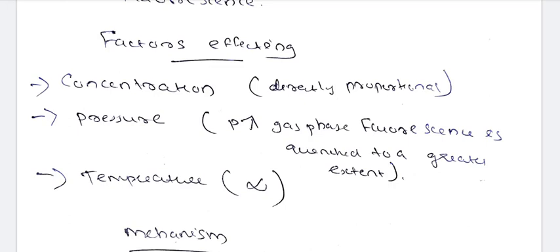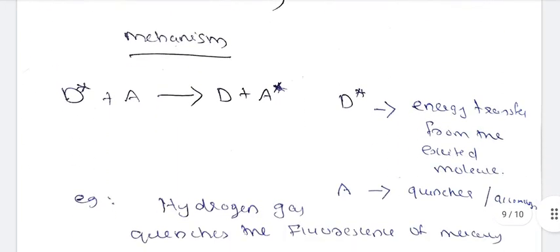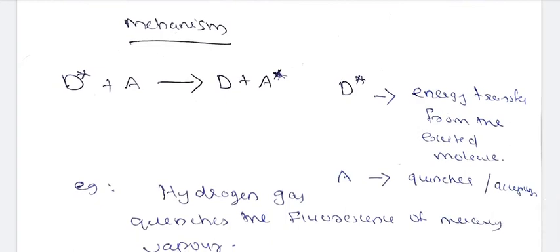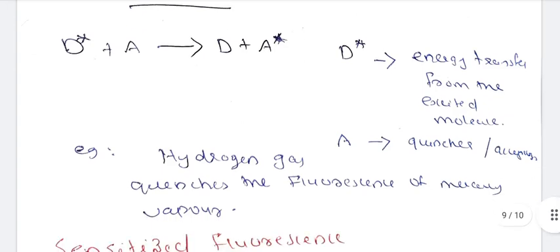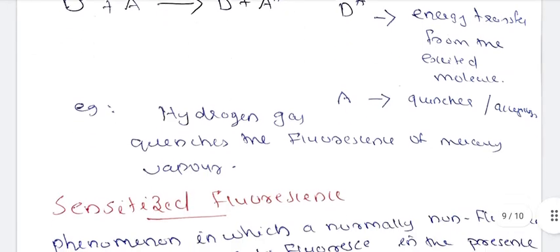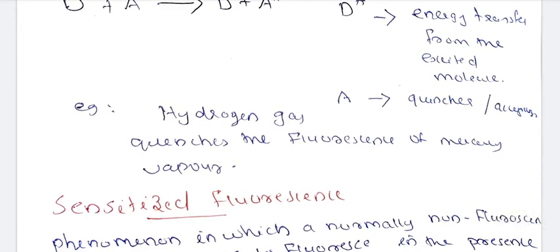The factors affecting quenching are concentration, pressure, and temperature — all directly proportional. The quenching effect is represented as: D* + A gives D + A*, where D* means energy transfer from the excited molecule. For example, hydrogen gas quenches the fluorescence of mercury vapour.